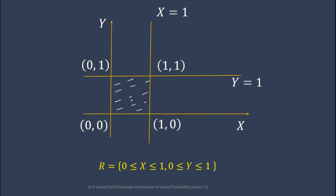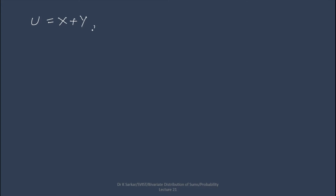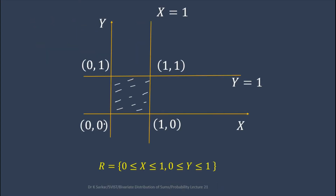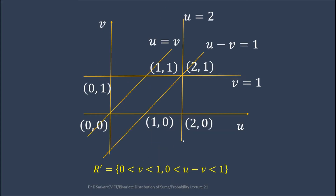Now let us convert this region to the UV plane. Let u equals x plus y and v equals x. So u equals x plus y and v equals x. In the UV plane the region becomes: 0 ≤ v ≤ 1 and 0 ≤ u minus v ≤ 1. We can see the lines v equals 1, u minus v equals 1, and u equals v in the diagram, identifying the transformed region.